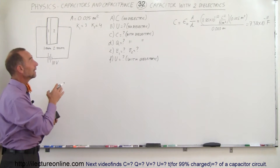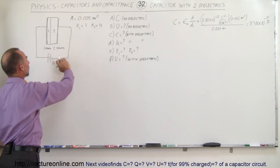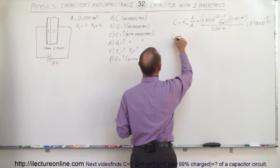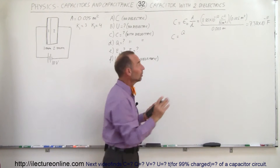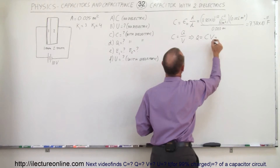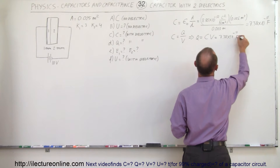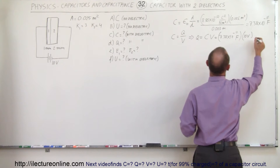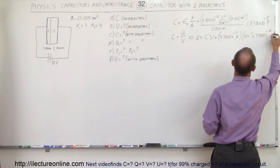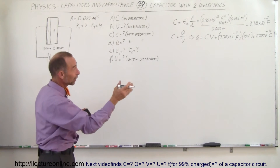Secondly, what is the energy contained? To know the energy, we need to know how much charge builds up. Assuming no dielectric and a 10-volt battery, the capacitance is C = Q/V, so the charge Q equals C times V: 7.38×10⁻¹¹ farads times 10 volts equals 7.38×10⁻¹⁰ coulombs.